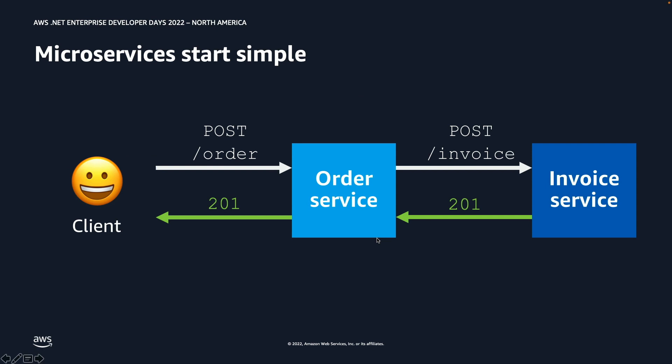Microservices typically start simple. In this example, we've got two services: an order service and an invoice service. It is a standard synchronous API-based setup. When a client makes a call to the order service, the order service turns around, makes a call to the invoice service, gets an invoice number as a response, and responds back to the client with that order number. This works great when we have a simpler system like this.